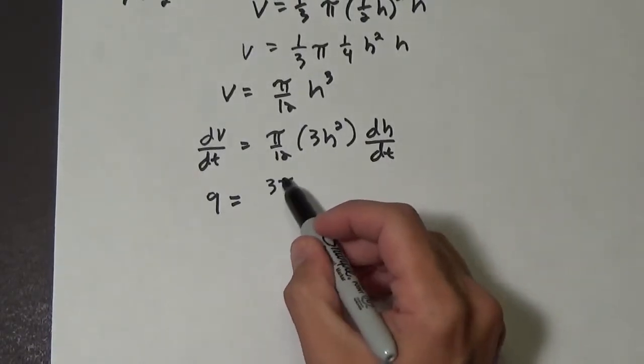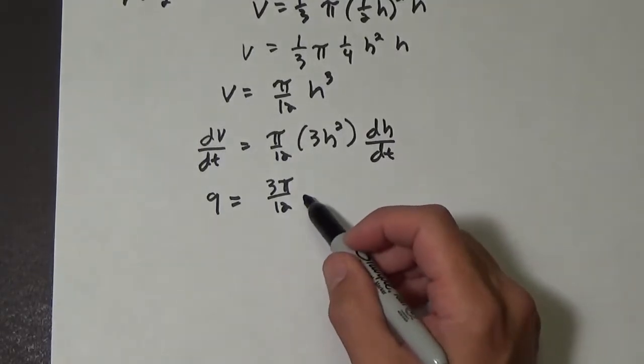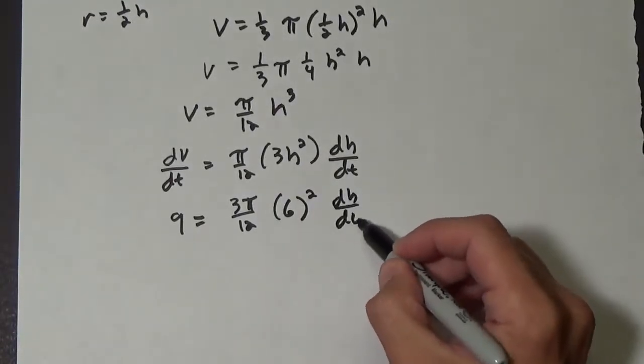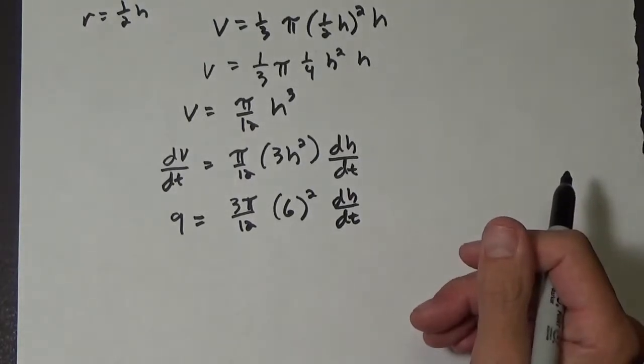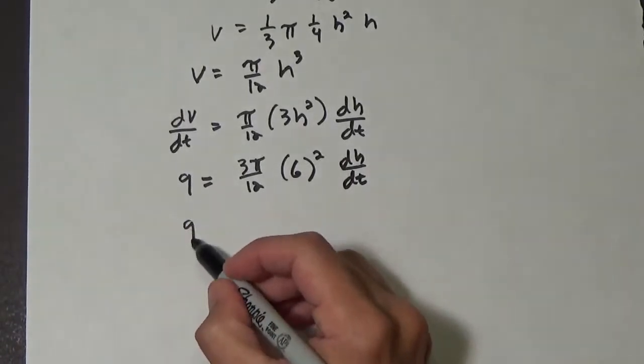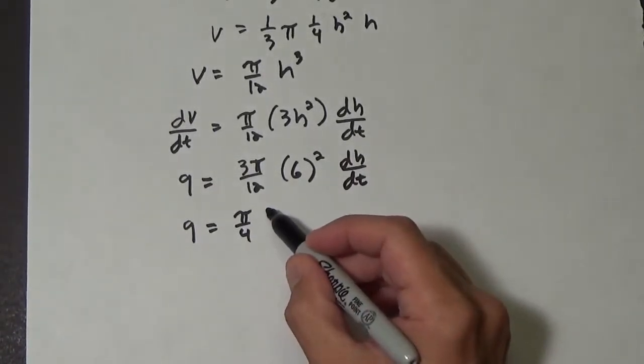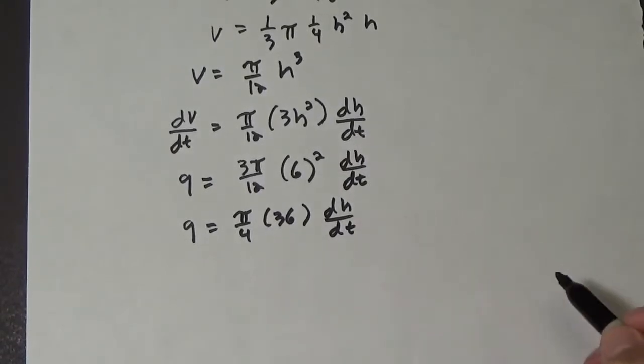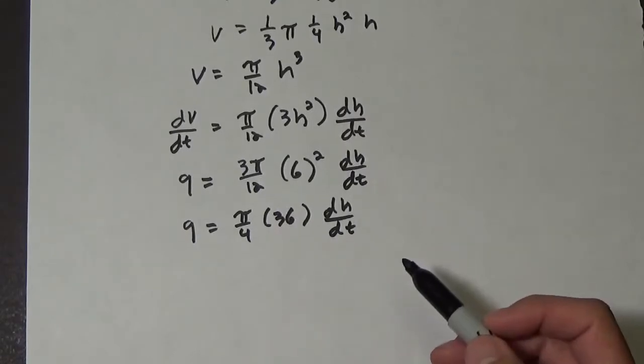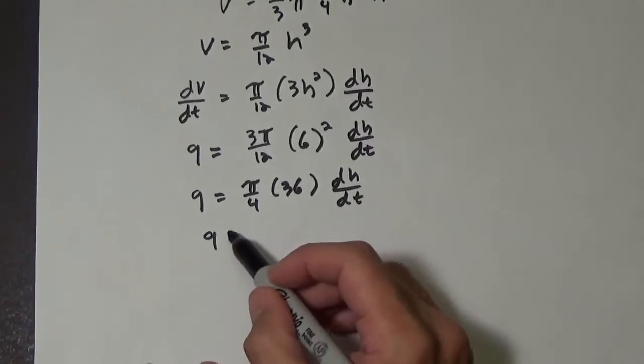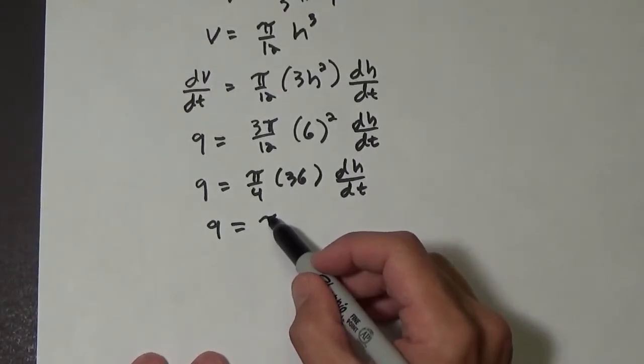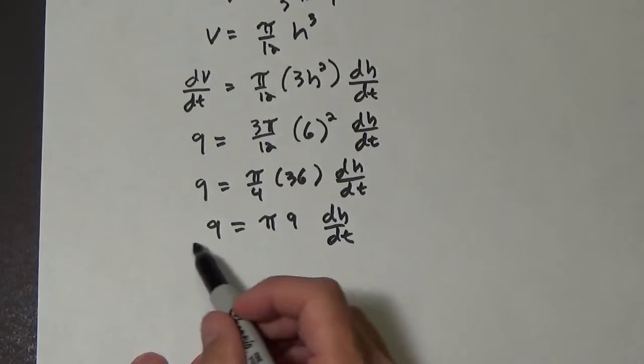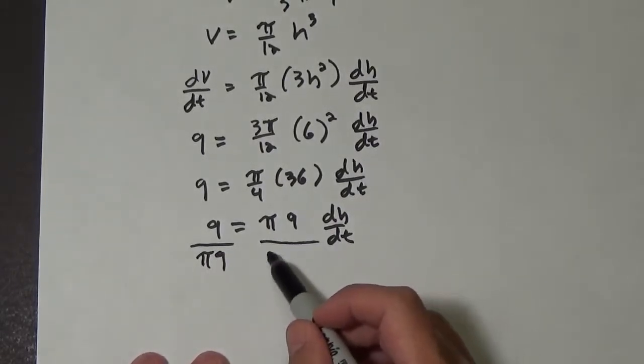We have 9 equals, alright, we have 3 pi over 12, which we'll be able to reduce to pi over 4 here soon. h is 6, so that's 6 squared. And then dh dt is what we're looking for. Alright, so we have 9 equals pi over 4 times 36 dh dt. Alright, well 4 goes into 36 9 times, so we get 9 equals pi times 9 dh dt. And we divide each side by pi 9.